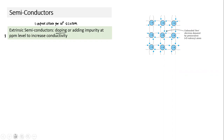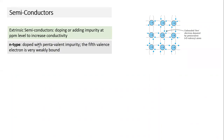Adding impurity at this very small proportion — one atom per million — can increase conductivity dramatically. The appropriate type of impurity must be chosen. Impurities are of two types: N-type and P-type. N-type impurity material is pentavalent — meaning the doped atoms have five valence electrons.